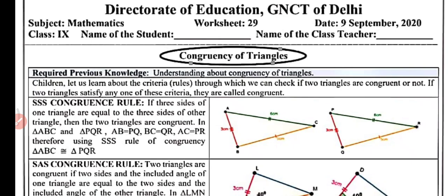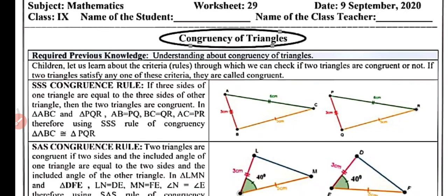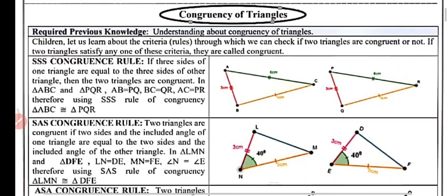As you can see, let us learn about the criteria and some rules through which we can check if two triangles are congruent or not. If two triangles satisfy any one of these criteria, then we can say both the triangles are congruent. We will study the first rule, that is, Side-Side-Side congruency rule.